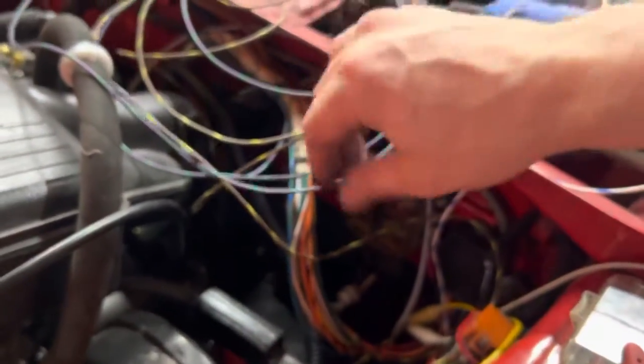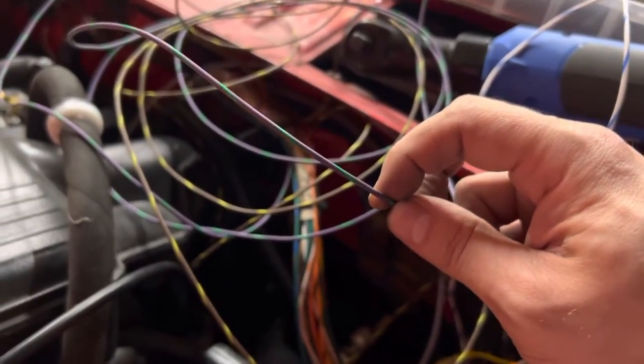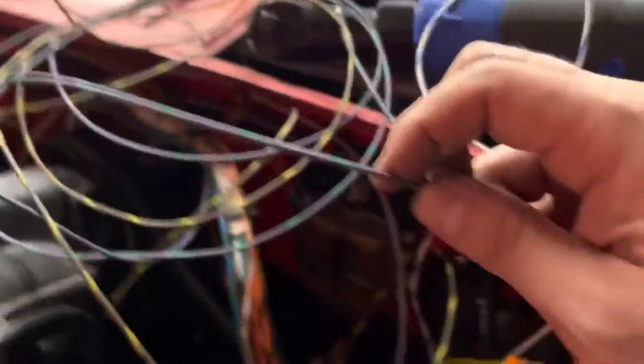Got all these wires that I still have to run through the interior, they have to go down through there and then I have to put the wire sheathing back on. This is the fuel pressure sensor, which is a pressure transducer. It's basically 0.5 volts to 4.5 volts, and the software translates that to pressure.